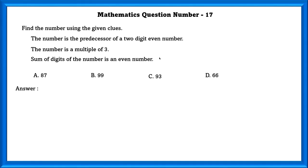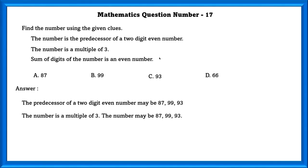Mathematics question number 17. Find the number using the given clues. The number is the predecessor of a two-digit even number. From the options, the number may be 87, 99 or 93. The number is a multiple of 3, so it can be 87, 93 or 99. The sum of the digits of the number is an even number. When we add the digits in 93, we get 12, which is even. So the answer is C, 93.